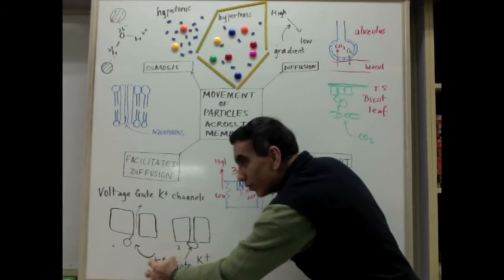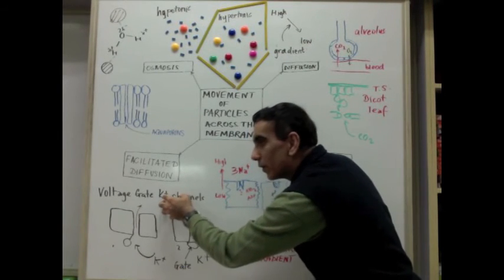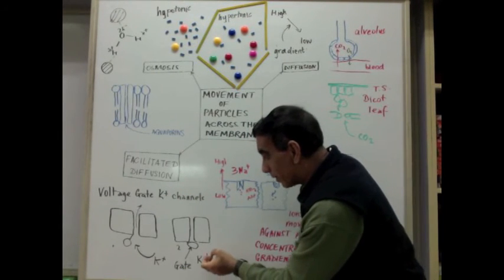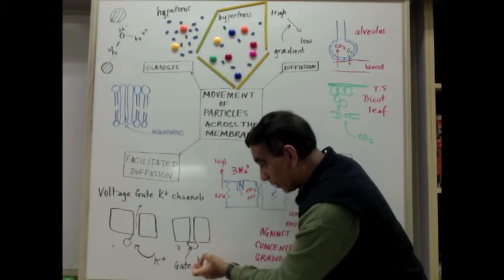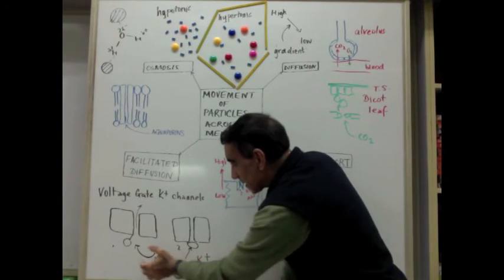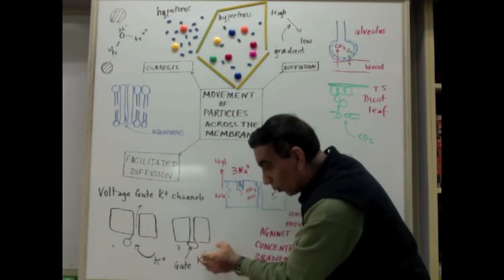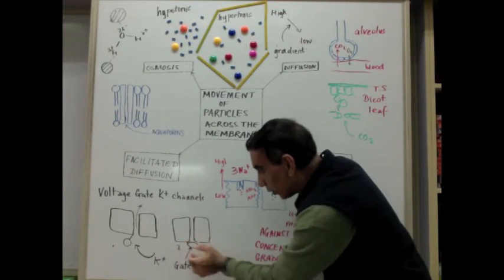Ions are moving from an area of their high concentration to an area of their low concentration. This diffusion happens in the absence of energy, and some potassium ions flow out. But once some of those potassium ions flow out, the gate closes.